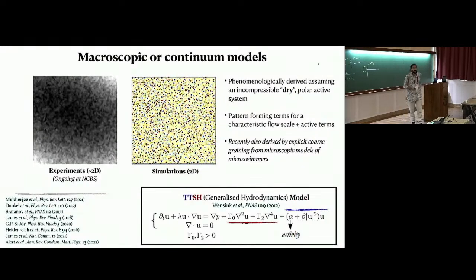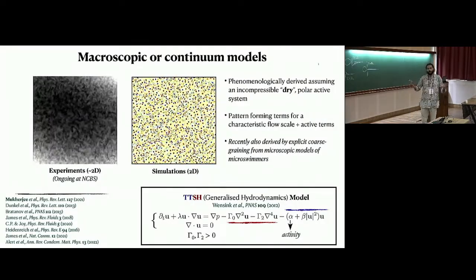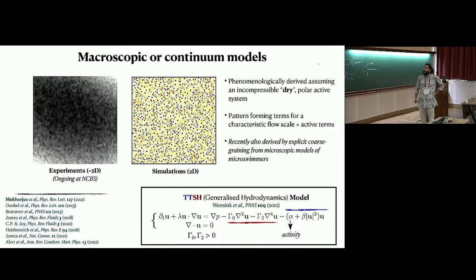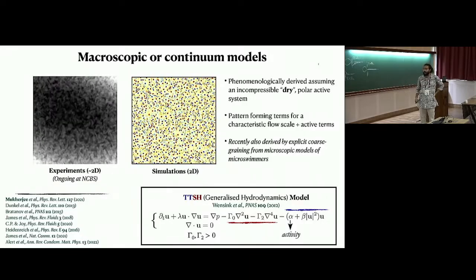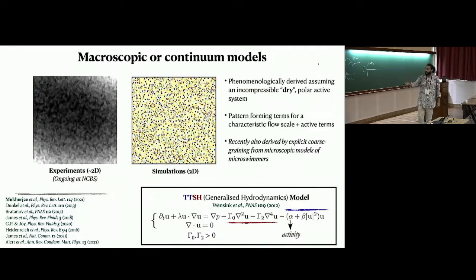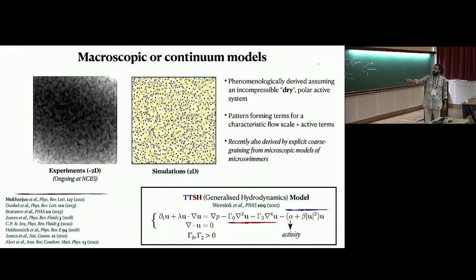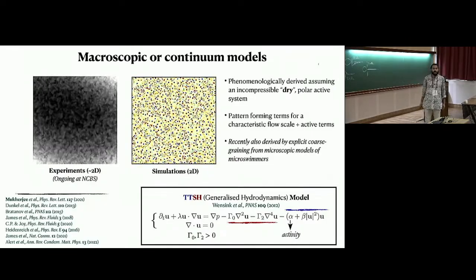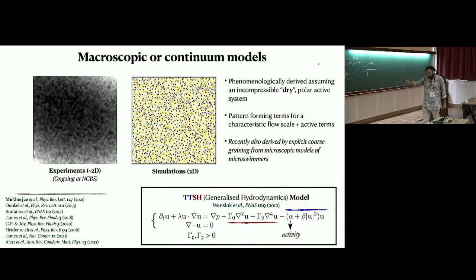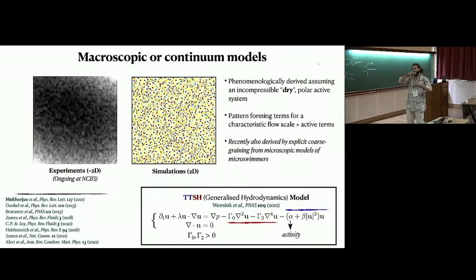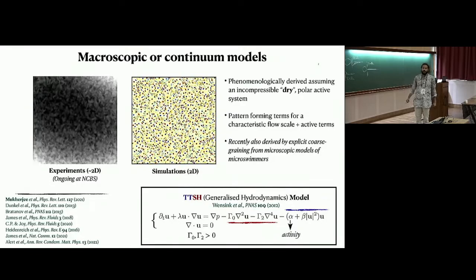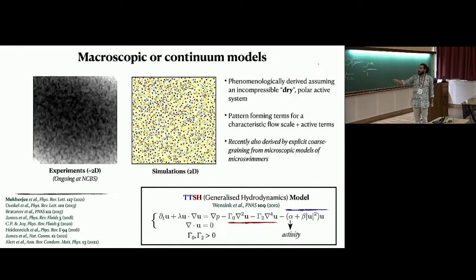We want to do this in a continuum sense. I'll be using the TTSH model — Toner-Tu-Swift-Hohenberg — which is a phenomenologically derived model. They took the Navier-Stokes equations, added terms from pattern-forming systems (the Swift-Hohenberg terms), and added terms from Toner-Tu theory for flocking. You need to destabilize the flow at certain intermediate wave numbers, but also inject energy through activity terms.